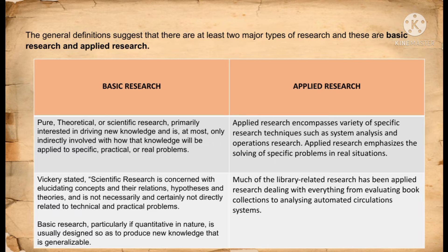Second is applied research. Applied research encompasses a variety of specific research techniques, such as systems analysis and operations research. Applied research emphasizes the solving of specific problems in a real situation. Much of the library-related research has been applied research dealing with everything from evaluating book collections to analyzing automated circulation systems. Applied research refers to and focuses on scientific study, and always seeks to solve practical problems in real situations.